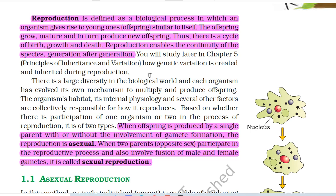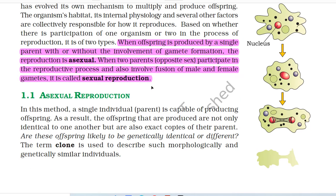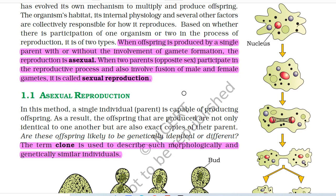You will study later in Chapter 5, Principles of Inheritance and Variation, how genetic variation is created and inherited during reproduction. There is large diversity in the biological world and each organism has evolved its own mechanism to multiply and produce offspring. Based on whether there is participation of one organism or two in the process of reproduction, it is of two types. When offspring is produced by a single parent with or without gamete formation, the reproduction is asexual. When two parents of opposite sex participate and involve fusion of male and female gametes, it is called sexual reproduction.